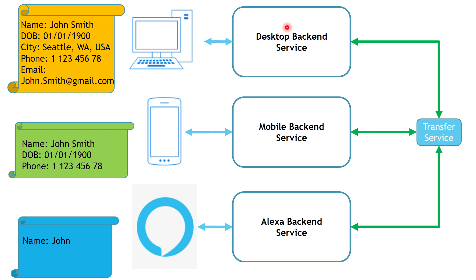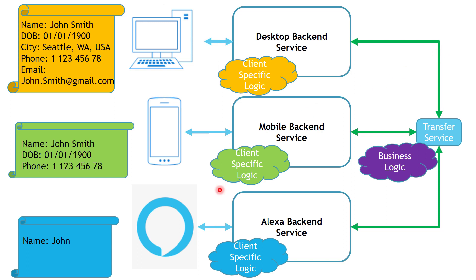Now you might be asking: what should stay in the backend service, and what should be moved to the transfer service? The answer is whether it is business logic or client-specific logic. Client-specific logic is logic specific to a particular frontend — for example, the Alexa backend service will have the Alexa-specific logic required to run your solution on Alexa, similar to the mobile and desktop backend services. Business logic, on the other hand, includes business rules or validations that need to be applied across all backend services. Keeping this distinction in mind will help you determine what should stay in the backend service and what should be moved to a common service.